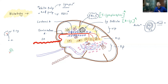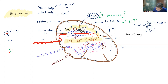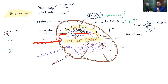Now the central artery will divide into penicilliary arteries, which terminate with penicilliary arterioles. So the sequence is: splenic artery → trabecular artery → central artery → penicilliary artery → penicilliary arterioles.